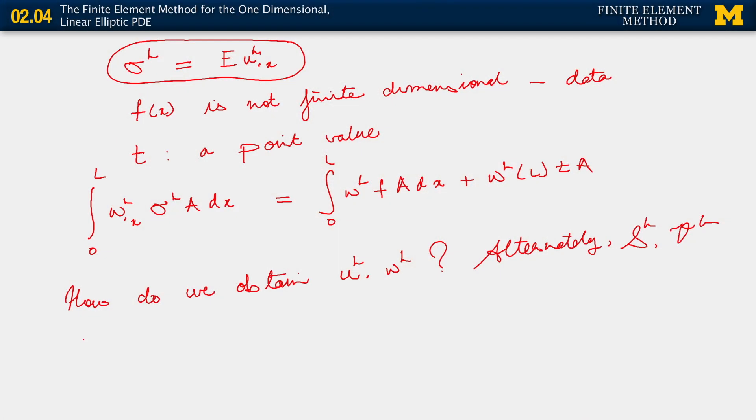Here's how we do it. What we do is partition (0,L) into finite elements, which are disjoint subdomains of (0,L).